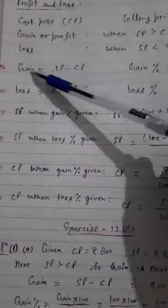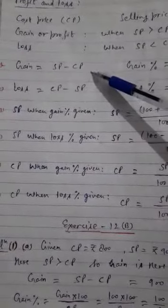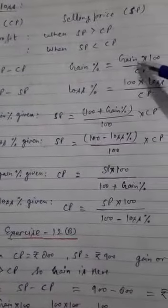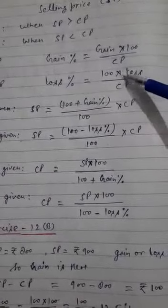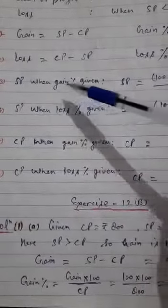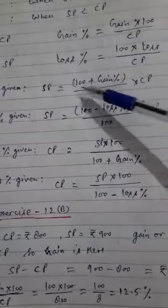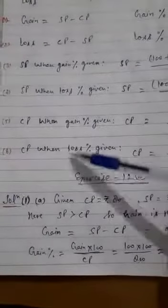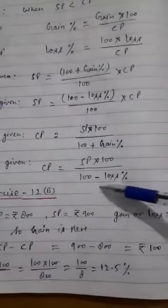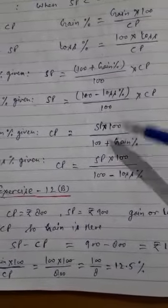These are the formulas you should know. Gain is equal to SP minus CP. Gain kab find out karein jab SP greater ho CP se. And gain percent: gain into 100 upon CP. Loss: CP minus SP. And loss percent: loss into 100 upon CP. SP when gain percent or loss percent is given, and CP when gain percent and loss percent is given - all these formulas you should learn.